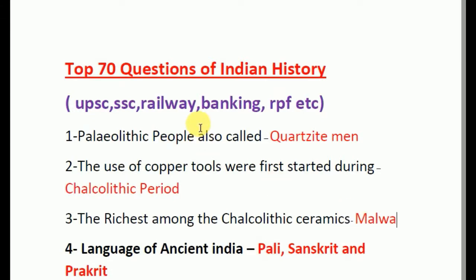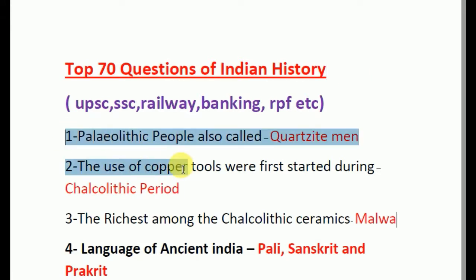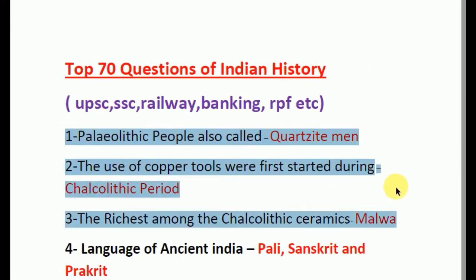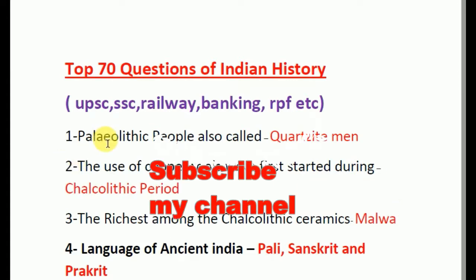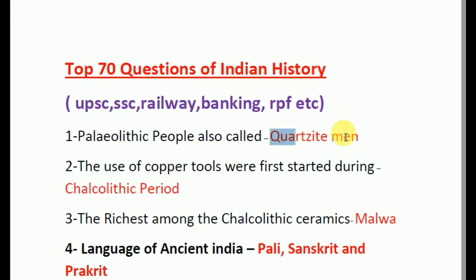Hello friends, let's discuss the top 70 questions of Indian history. These questions are very important. Indian history is divided into three parts: ancient history, medieval history, and modern history. These questions only contain ancient history. Paleolithic people are called ancient Quartazite men. The use of copper tools was first started during the Chalcolithic period.